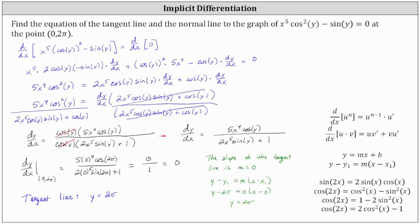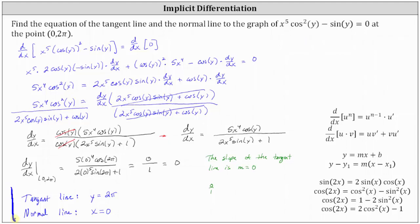The normal line is perpendicular to the tangent line at the point zero comma two pi. If the tangent line is a horizontal line, then the normal line is a vertical line. The vertical line passing through the point zero comma two pi is x equals zero. Notice the slope of the tangent line is zero, written as zero over one; the negative reciprocal is negative one divided by zero, which is undefined — confirming the normal line is vertical. So the equation of the tangent line is y equals two pi, and the equation of the normal line is x equals zero.